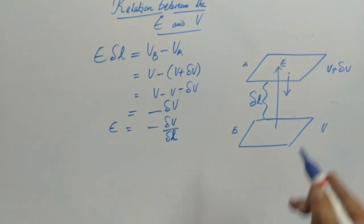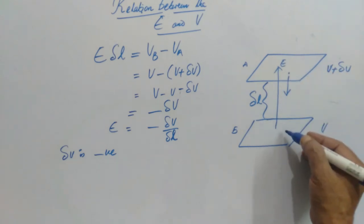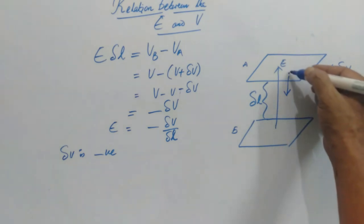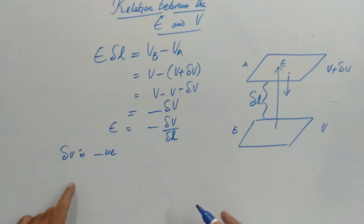We know that delta V is negative, because VA is at lower potential and VB is at higher potential. That is the reason why we have to do some work. So delta V is negative.